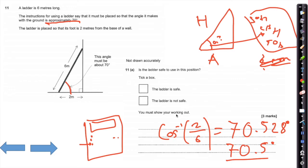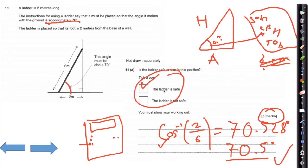As it says approximately 70 degrees — in the real world I would say that is safe. If you're 0.5 degrees out, you're pretty much at 70 degrees. Three marks: the attempt to use cos, getting 70.5 or 70.528, and then circling the right answer. So that will be all three marks.